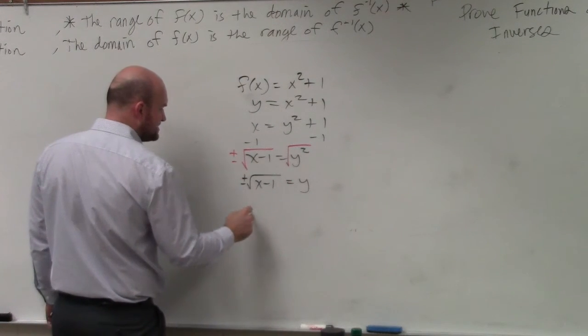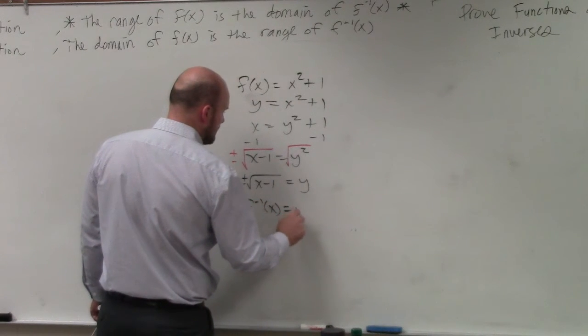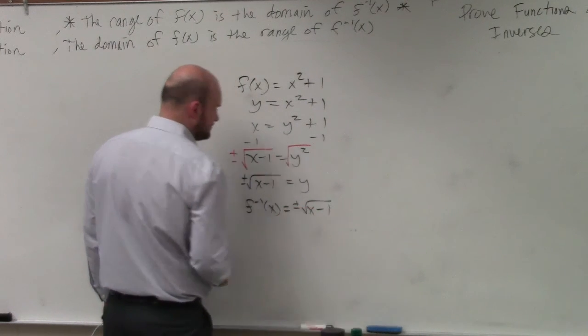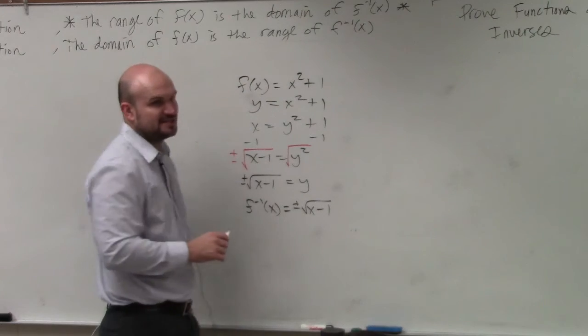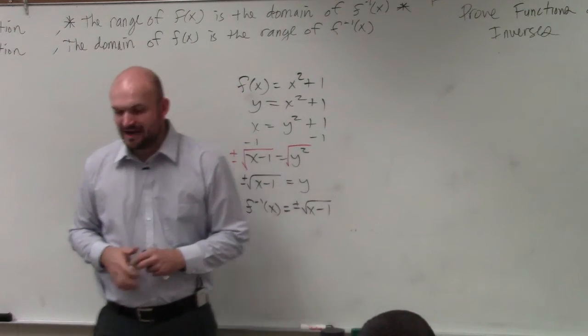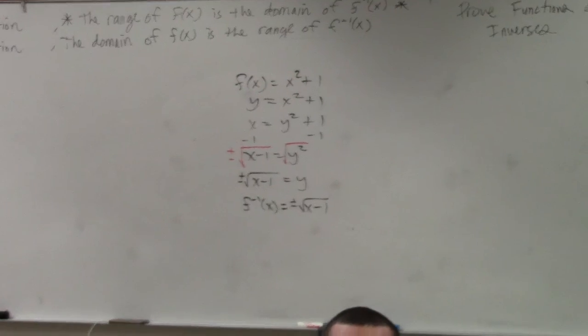And then my last step is I'll replace this, and I'll say f inverse of x is equal to plus or minus the square root of x minus 1. Please notice there's a positive and a negative version, right? My input can have two different outputs. My input can have two different outputs. That should trigger you to remember.